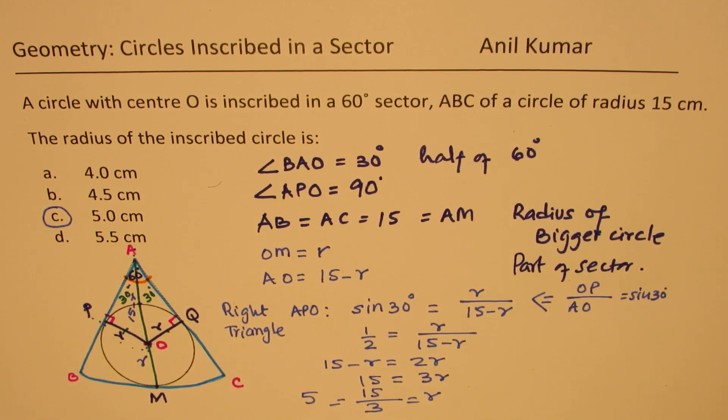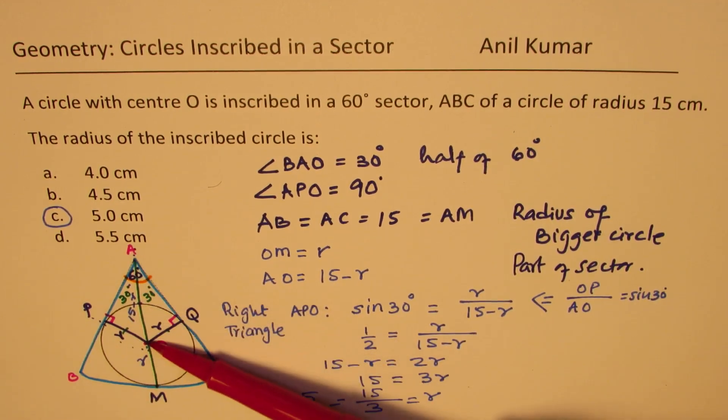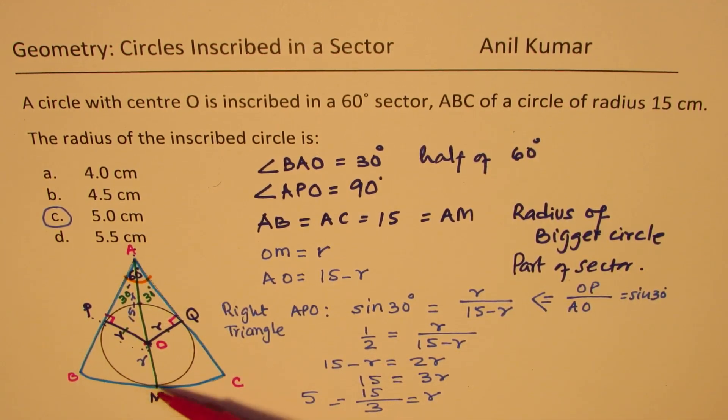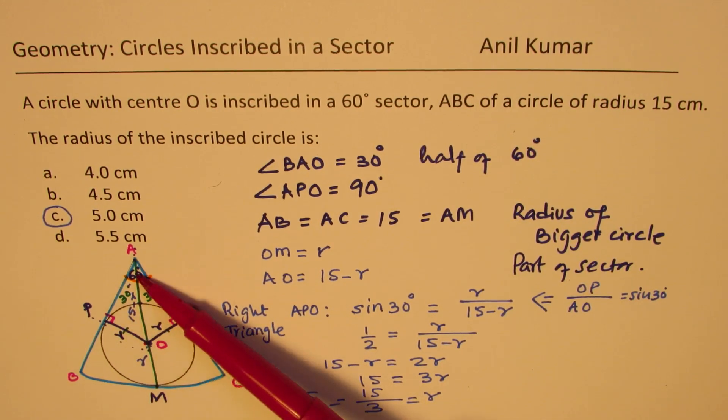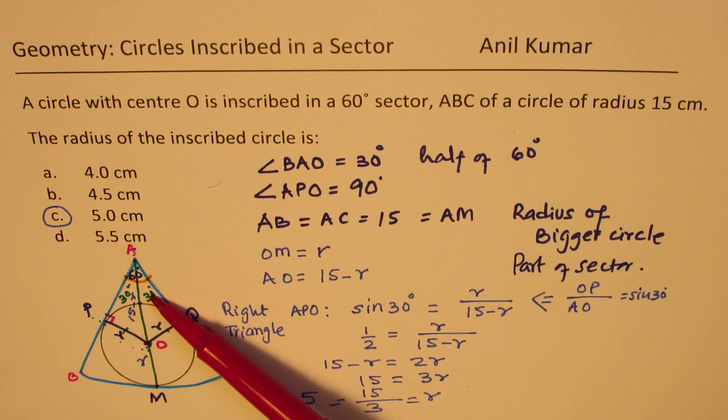So let's try to understand this strategy. So we constructed from O, OP, OQ, and OM. OM we got by extending AO to the other side of the sector. Now, since these are the two radii, we know that AO will be bisecting the angle 60 degrees into 30 and 30.